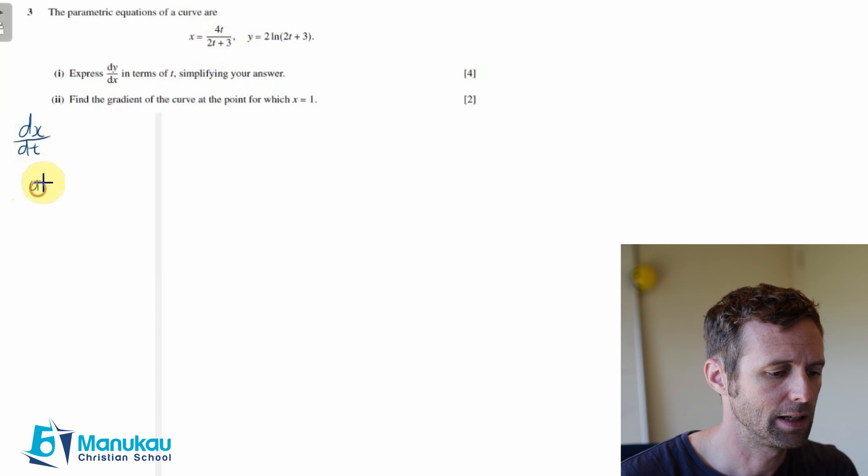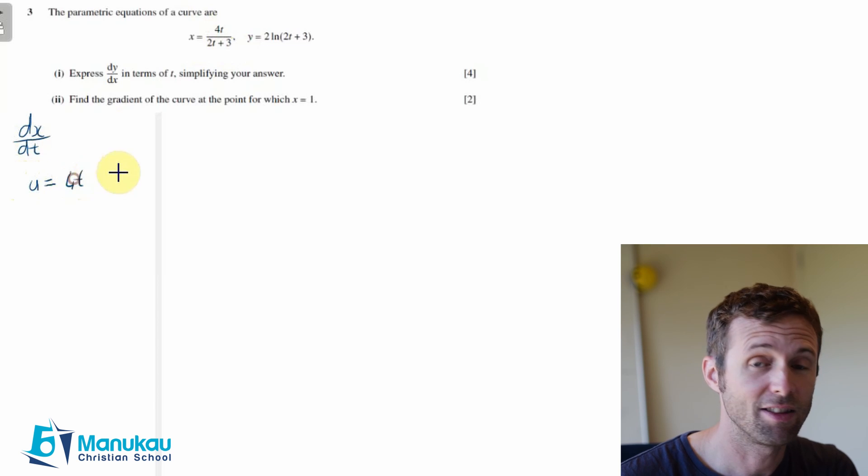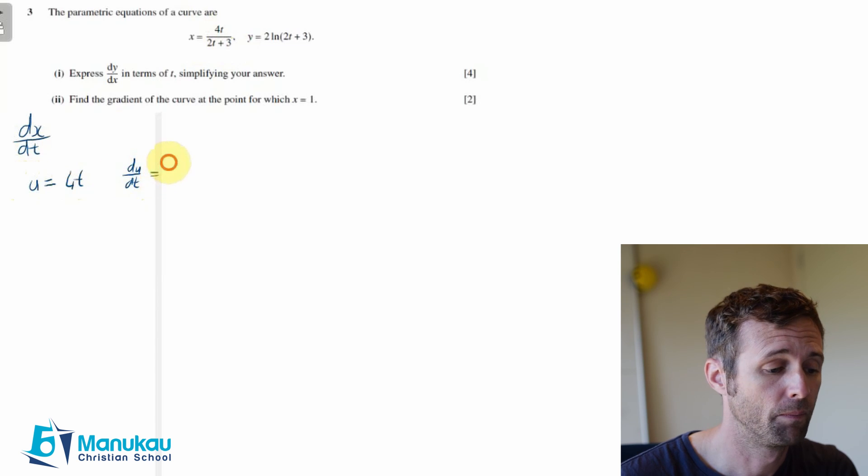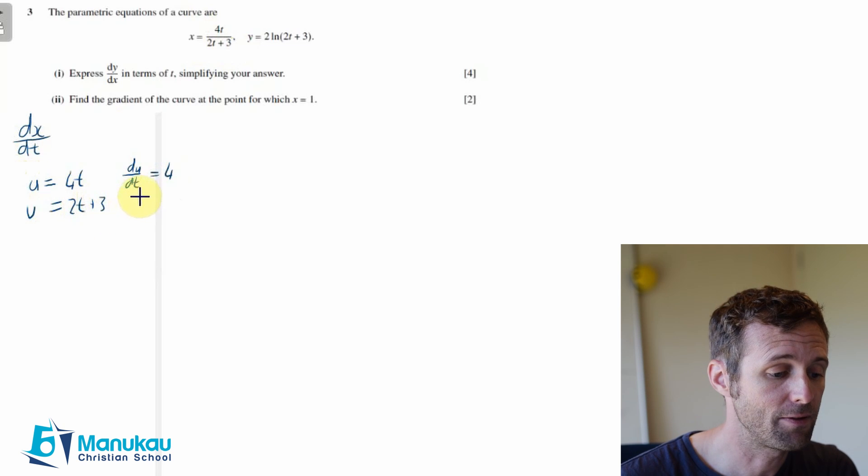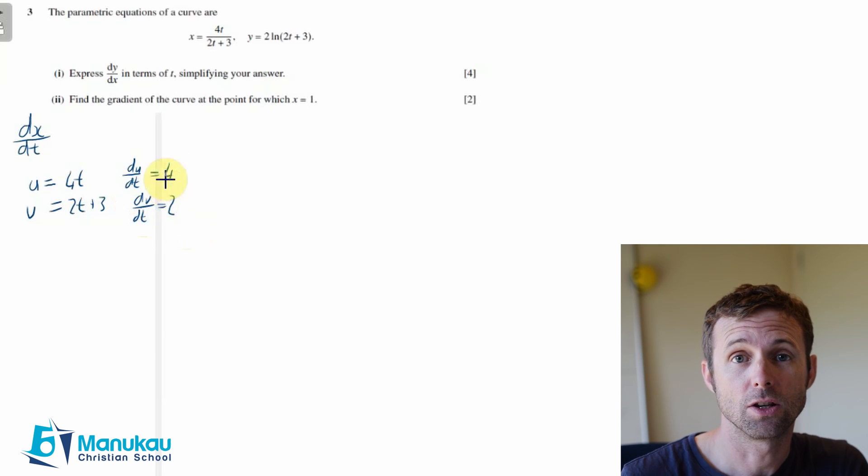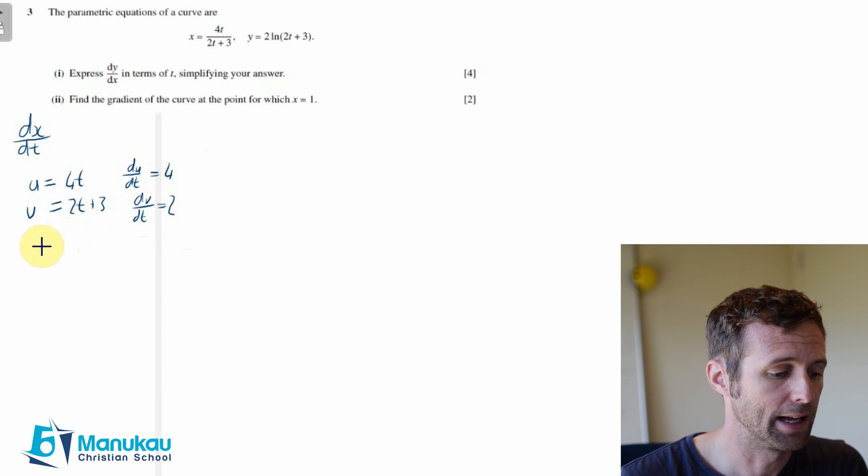So I'm going to say u equals 4t, and therefore du/dt must be 4. Then I'm going to say v equals 2t plus 3, and therefore dv/dt must simply be 2. At this point I can use my quotient rule.